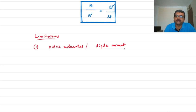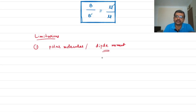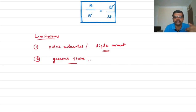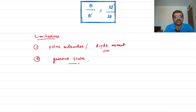A dipole moment is necessary for a molecule to show a rotational spectrum. Furthermore, while rotating, the molecule must change its dipole moment — either in magnitude or direction — in order to absorb microwaves and produce a rotational spectrum. The second limitation is that molecules must be in the gaseous state. In liquid or solid states, intermolecular interactions prevent observation of a pure rotational spectrum. In the gaseous state these interactions are negligible, so pure rotational spectra can be observed.